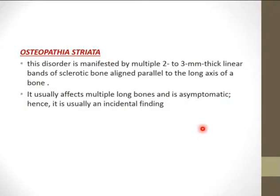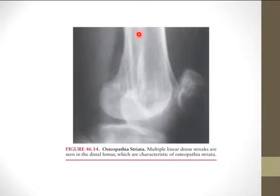Osteopathia striata is manifested by multiple 2–3 mm thick linear bands of sclerotic bone aligned parallel to the long axis of the bone, usually affecting multiple bones. It is asymptomatic and usually an incidental finding.